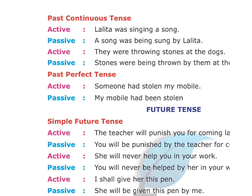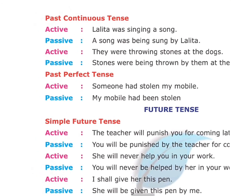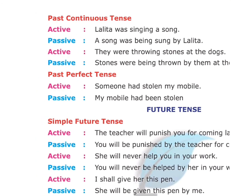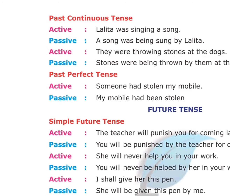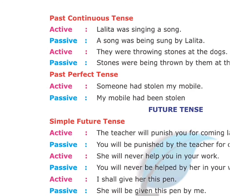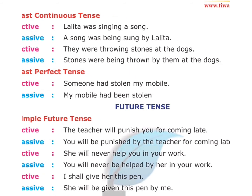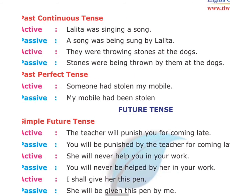Past continuous tense. In the present tense we use is/am/are being, but in the past continuous tense we use was being or were being, followed by the verb in third form. Example — Active: 'Lalita was singing a song.' Passive: 'A song was being sung by Lalita.' Active: 'They were throwing stones at the dogs.' Passive: 'Stones were being thrown by them at the dogs.' Stones is plural, so we use 'were.'